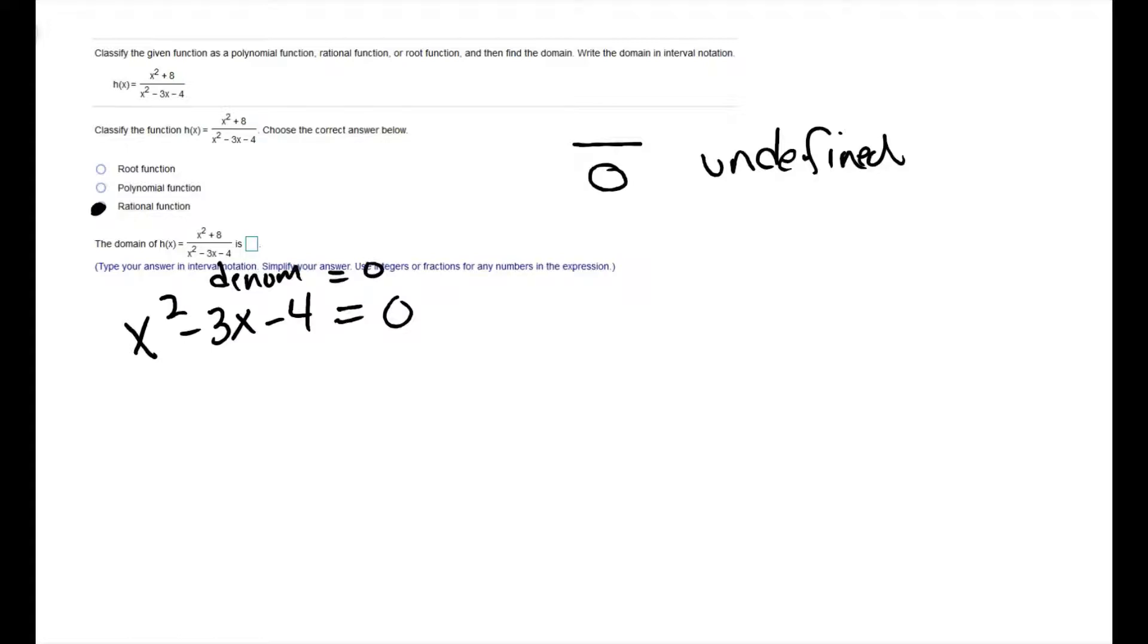So we're trying to find when the denominator is equal to zero so we can find out where the function is undefined. So this is a quadratic equation which I can solve by factoring. Let me factor. The numbers that go here and here need to multiply to be x squared, so that's going to be x and x. The numbers that go here and here need to multiply to be negative 4. So we have a couple choices. Factors of 4 are 1 and 4, and 2 and 2, but I'm going to use 1 and 4 because that's going to help me get that middle number of 3. So if I use a negative 4 and a positive 1, that's going to give me the right factorization.